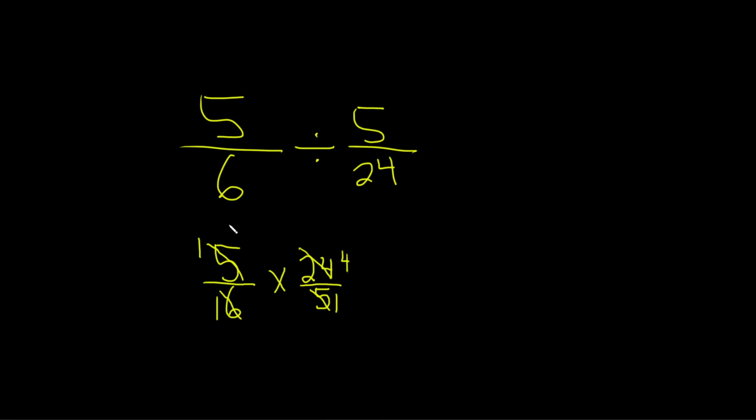Okay, now we just multiply straight across. 1 times 4 is equal to 4, and 1 times 1 is equal to 1. So we have 4 over 1 and that's the same thing as 4. And that should be the final answer. I hope this video has been helpful.